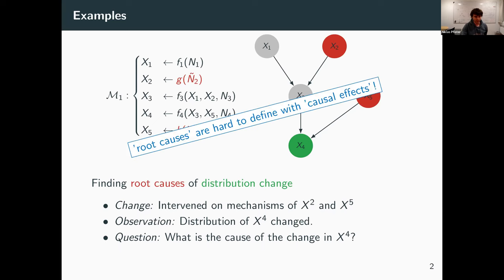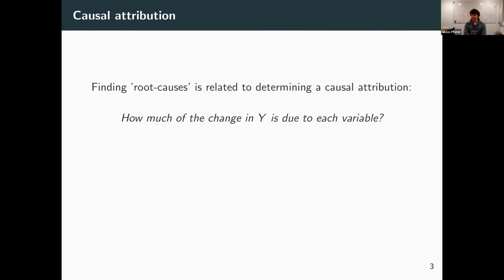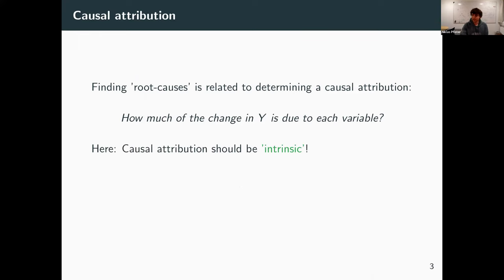This problem of associating root causes can be phrased as a causal attribution problem: how much of the change in y is attributed to each of the variables? We give each a score, and ideally they sum to 1. The important notion here — also mentioned in one of the papers — is intrinsic attribution.